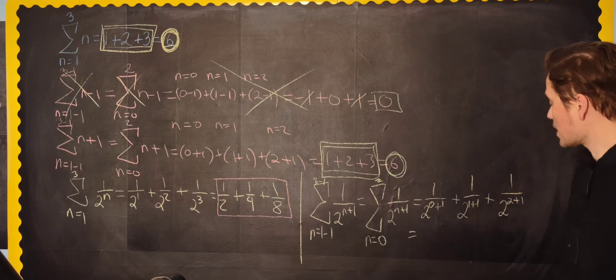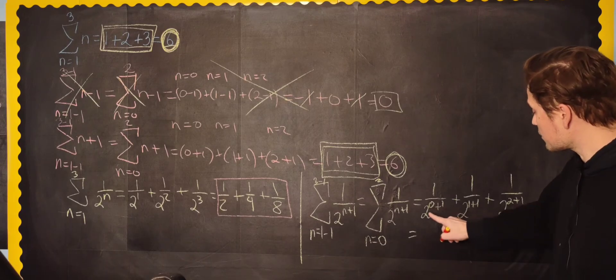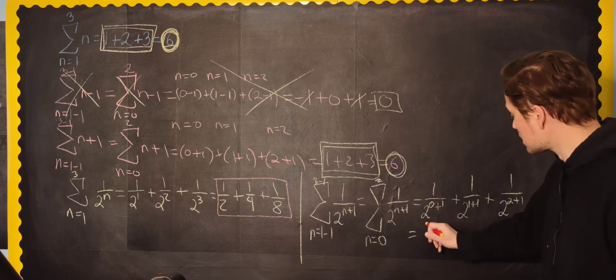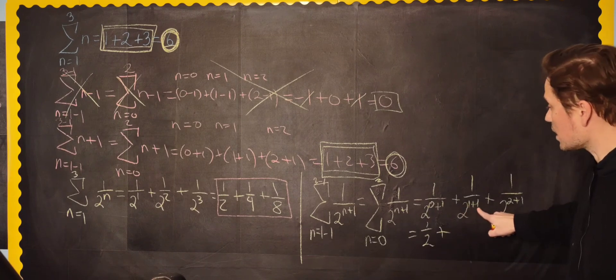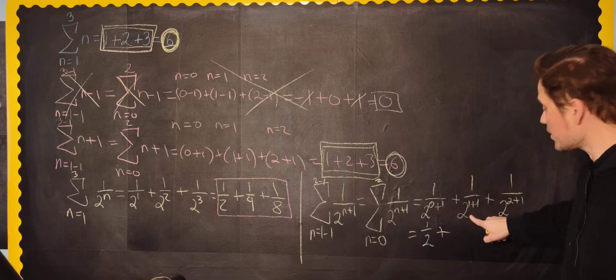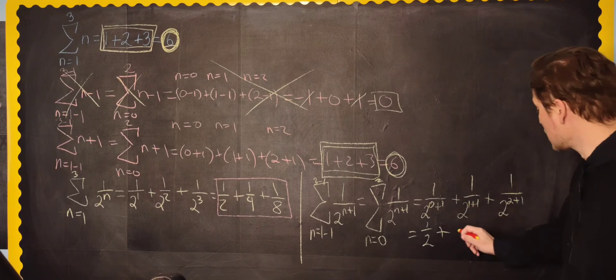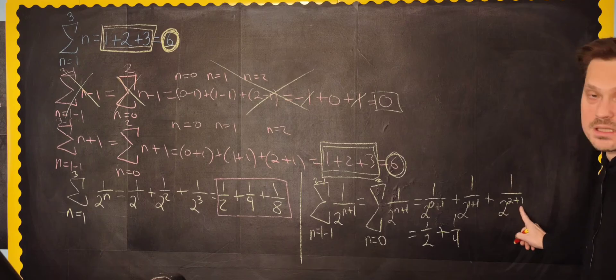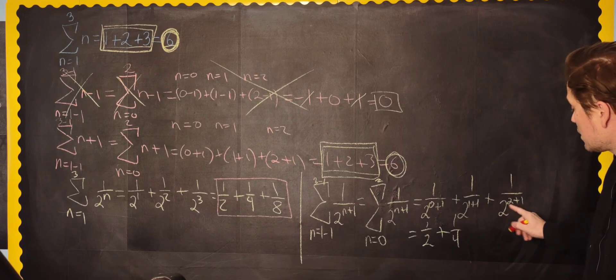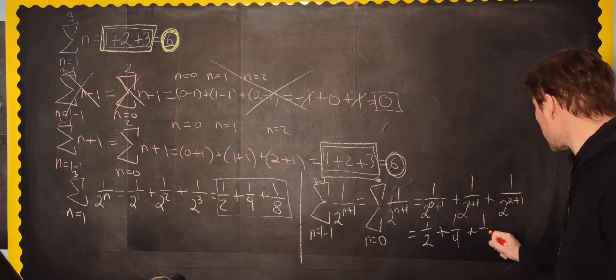Worked with this fraction. This is 2 to the 0 plus 1 is 2 to the 1st. In other words, it's just 1 half. All right, look. This is 2 to the 1 plus 1. So it's 1 over 2 to the 2nd, which is 4. So it's 1 quarter. And this is 2 plus 1, which is 3. So it's 2 to the 3rd, which is 8. In other words, it's plus 1 eighth.